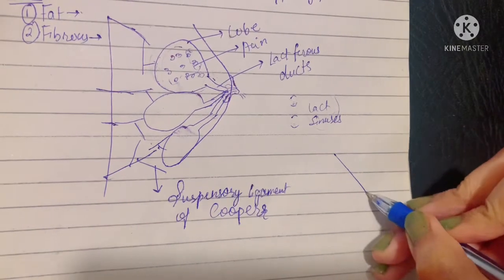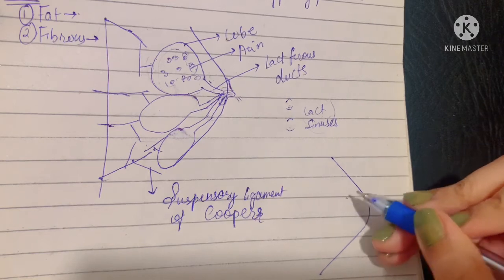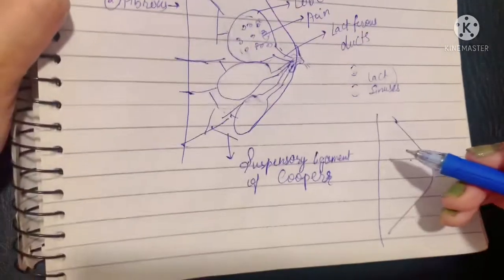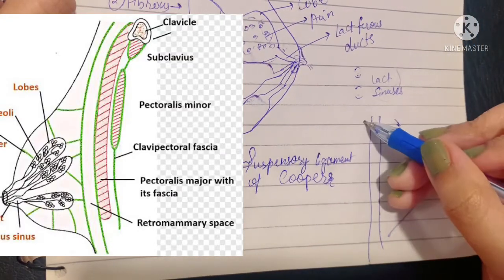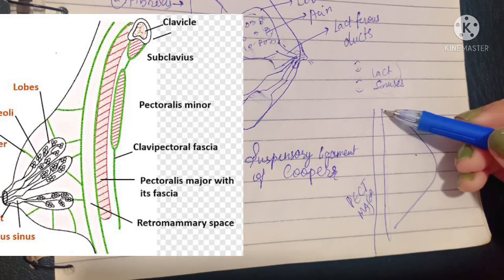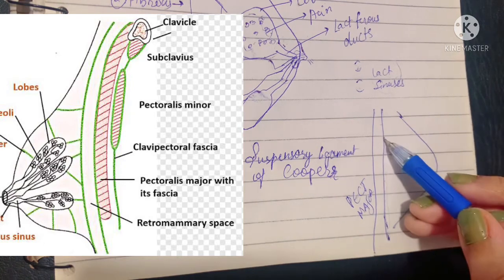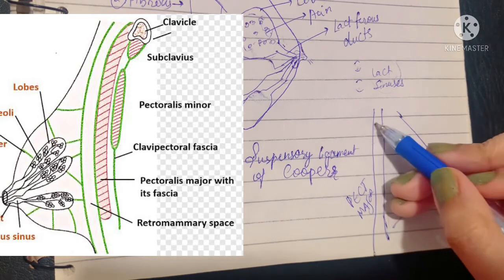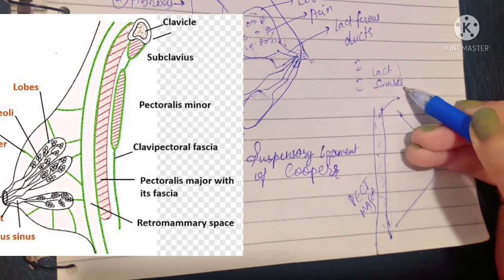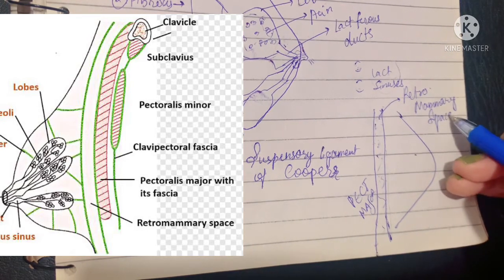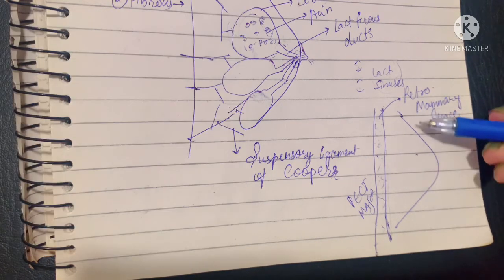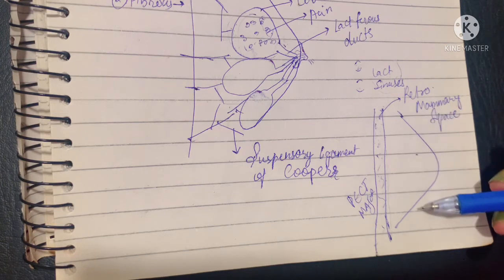The breast is in the superficial fascia of the pectoral region. In normal cases the superficial fascia and deep fascia are mostly attached to each other; however, in the case of the breast, the superficial fascia is separated from the deep fascia by a space containing very loose connective tissue. This is known as the retromammary space, and its significance is that it allows the breast to be freely mobile over the chest wall.